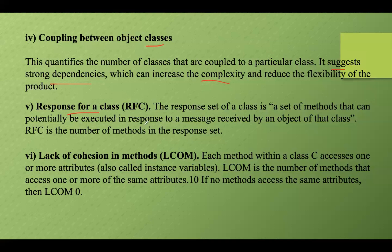Response for a Class (RFC) is a metric that measures the number of methods that can be executed in response to a message received by an object of that class, including methods in the class itself and methods in classes it collaborates with. A high RFC value indicates a more complex class and may suggest a need for refactoring. Lack of Cohesion in Methods (LCOM) measures how related and focused the methods of a class are. A low LCOM value indicates higher cohesion, meaning methods work closely together. High cohesion is always desirable as it suggests the class has well-defined responsibility. If no methods access the same attributes, the LCOM value is considered to be zero.